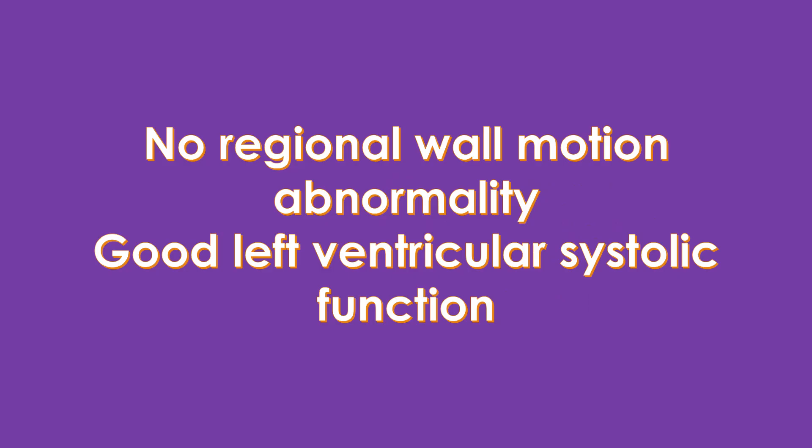After the descriptive report and the measurements, the final conclusion is usually reported at the end. In case of a normal adult study, it may read as: no regional wall motion abnormality, good left ventricular systolic function. Regional wall motion abnormality may also be written in short as RWMA. If abnormalities have been detected, the conclusion part will be larger and include the salient parts of the echo study.